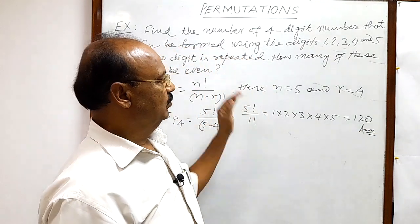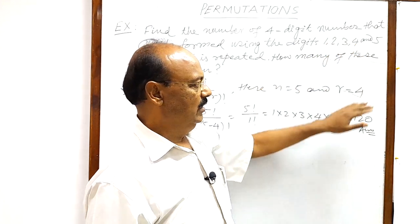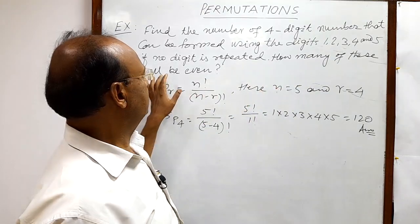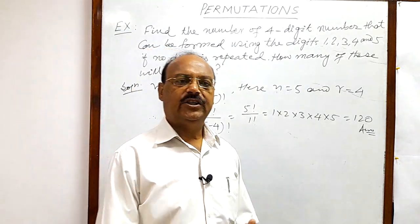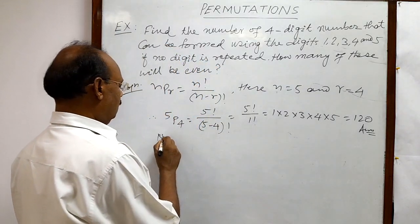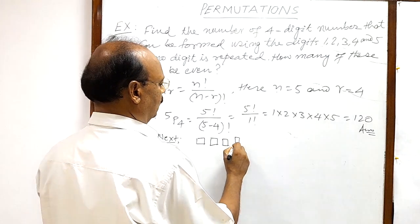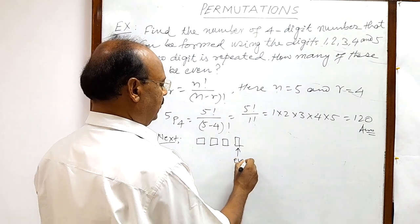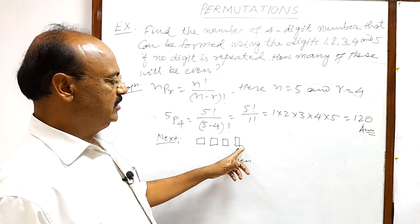So the total number of four-digit numbers that can be formed using these five digits is 120. Now for the second part: how many of these will be even? For a number to be even, the digit at the units place must be an even number. We have to form four-digit numbers and the units place must hold an even digit.